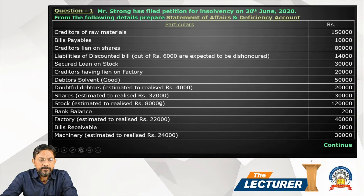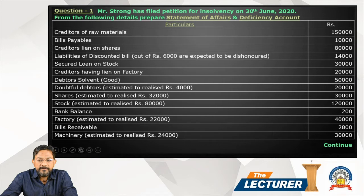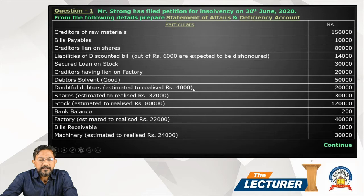Then debtors: good debtors 50,000. Doubtful debtors 20,000, expected realization 4,000. Remaining are bad debtors — loss. Shares: 30,000 for creditors and 80,000 value.